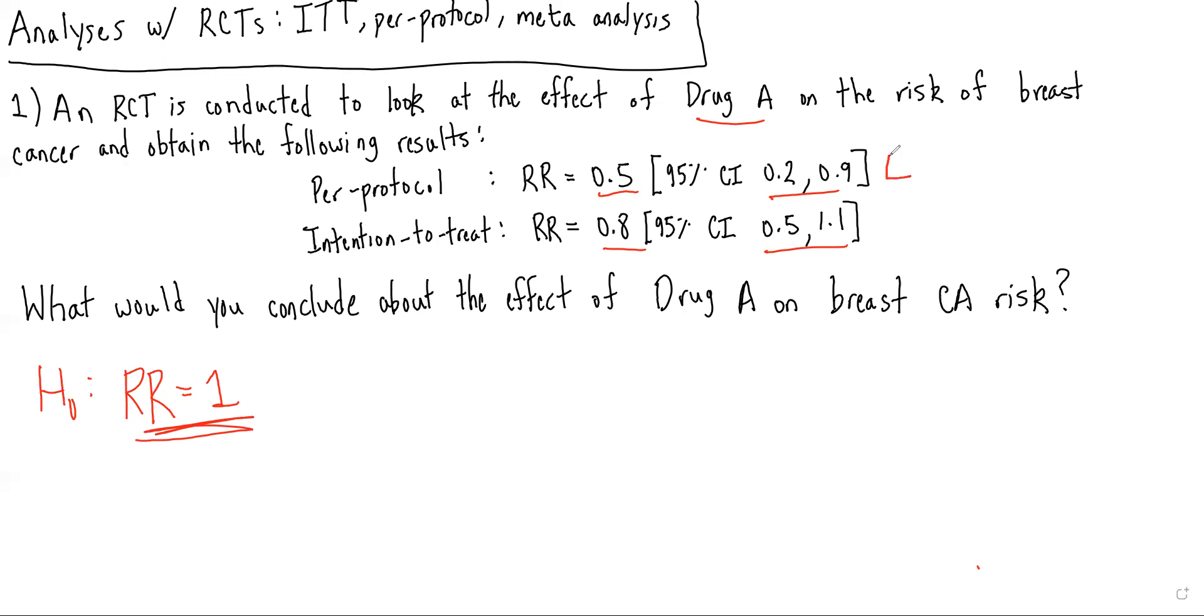Looking at these two results, we can see that the per protocol results are statistically significant because one does not fall between 0.2 and 0.9, whereas the intention-to-treat analysis is not statistically significant because one can be found between 0.5 and 1.1.